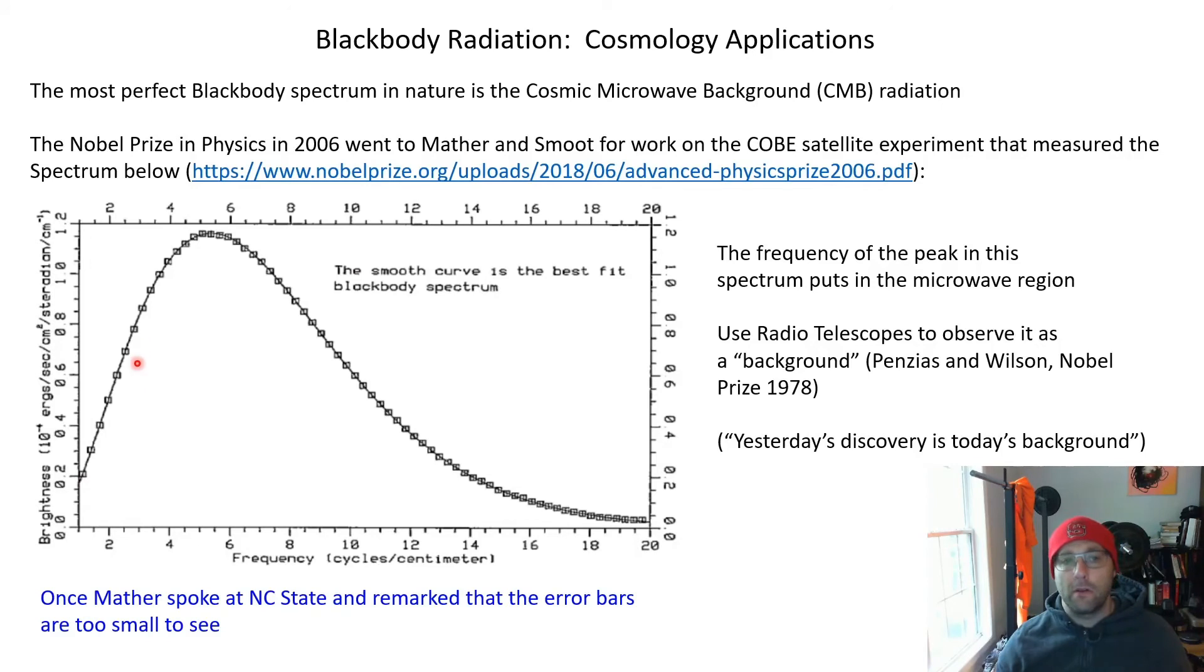And so one of the things that's interesting about this plot is if you look at it, the fit to the blackbody curve that we know is true by now, there's a solid line here. The error bars on the experimental data points are too small to see on the plot. So they're smaller than the square symbol size. So Mather came to NC State a couple years ago to give the Thomas lecture and he pointed that out in his talk that he gave us.